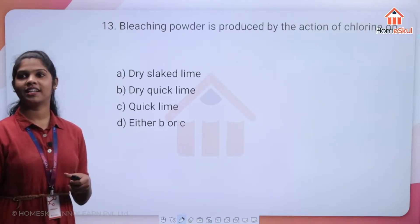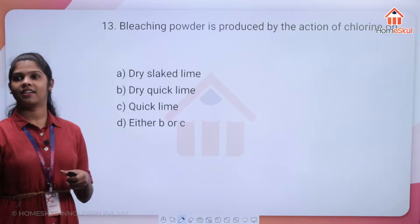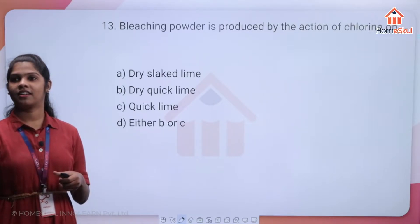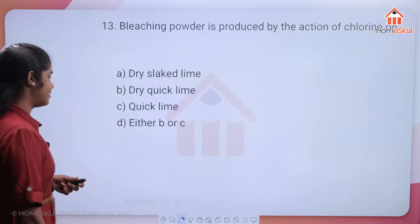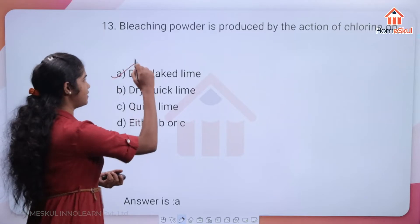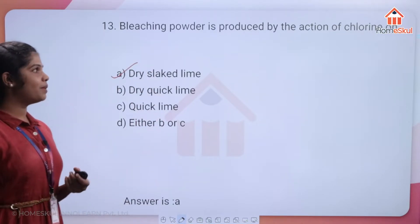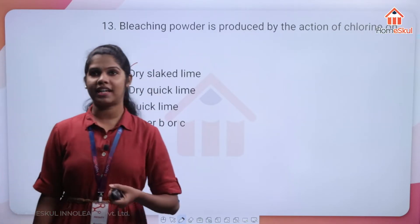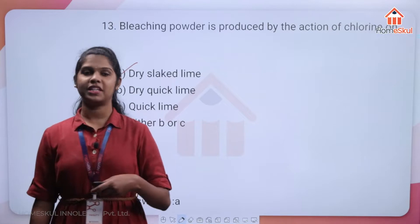The answer is option A — slaked lime. Slaked lime and chlorine react to form bleaching powder.